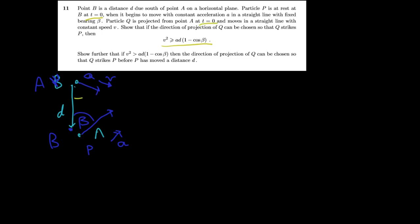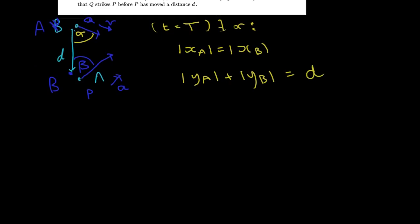Well, if we can choose the direction of Q such as a collision, remember that both these particles are shown at the same time, then there must exist some angle alpha. So at a certain time, at T equals capital T, there exists an alpha such that the following holds. This means that the horizontal displacements are going to be the same. This also means that the magnitude of both vertical displacements are going to add to give D, right? The vertical distance that they were apart.